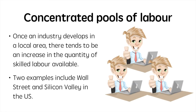The second external economy of scale that could arise is the benefit from concentrated pools of labour. Once an industry develops in a local area, there tends to be a growth in the quantity of skilled labour available in that region. Two examples include Wall Street and Silicon Valley in the United States. For firms operating in these areas, recruitment costs may fall because talent is drawn to living and working here. Many bankers and business people live in and around New York City due to the opportunities available, and the same holds true for highly skilled technology workers in Silicon Valley.